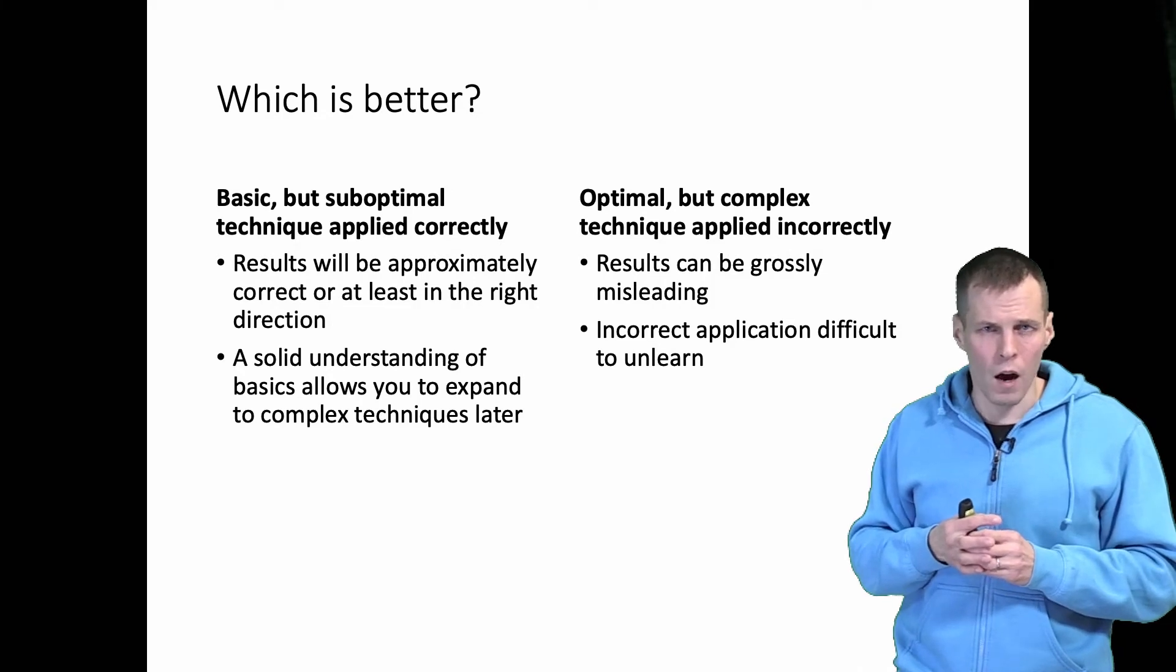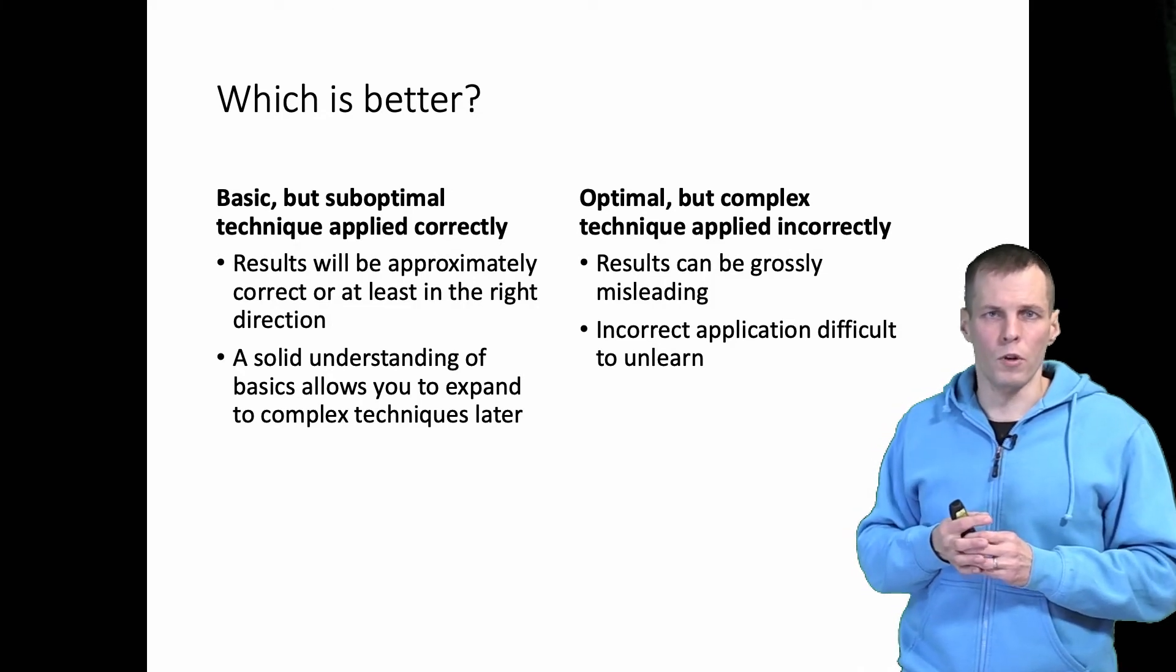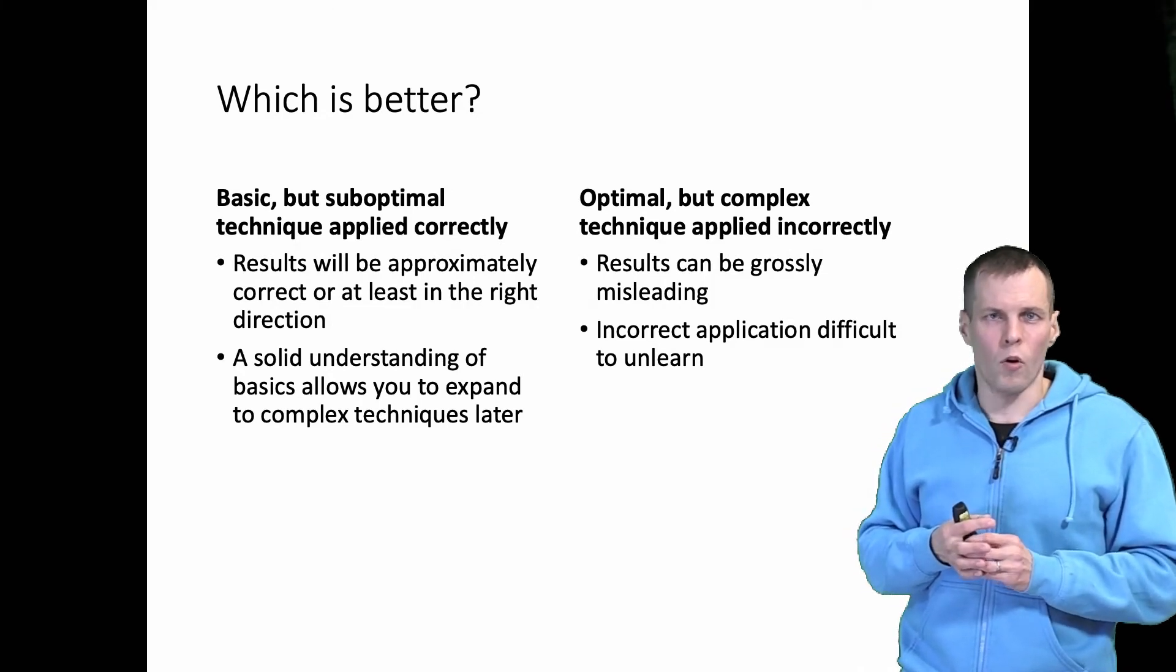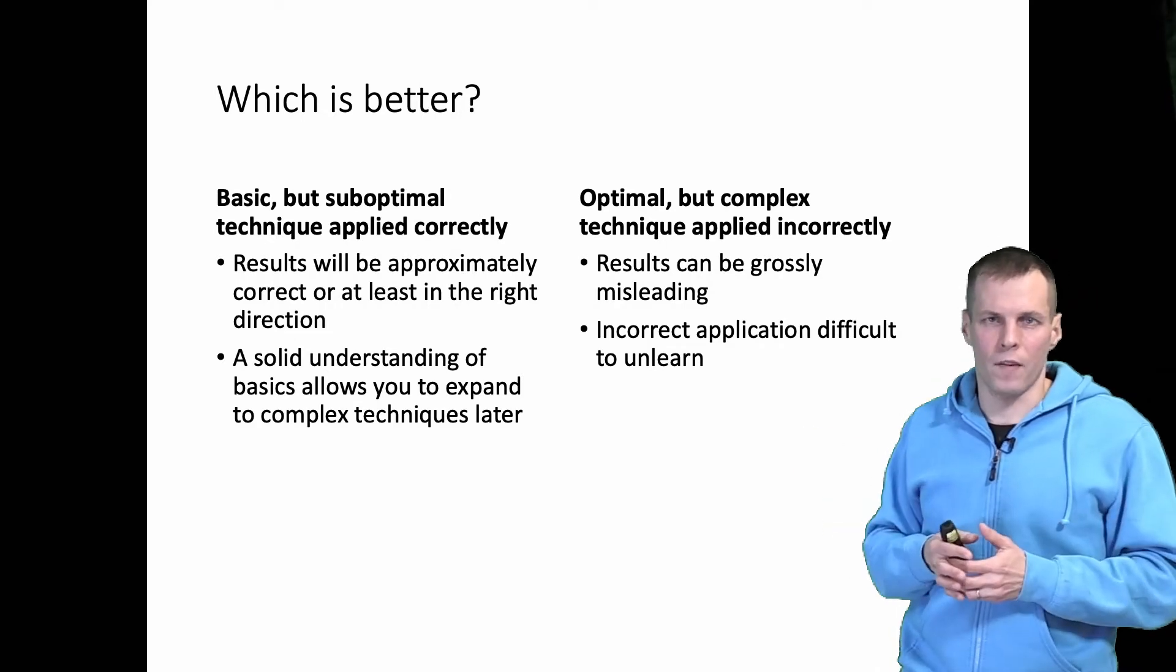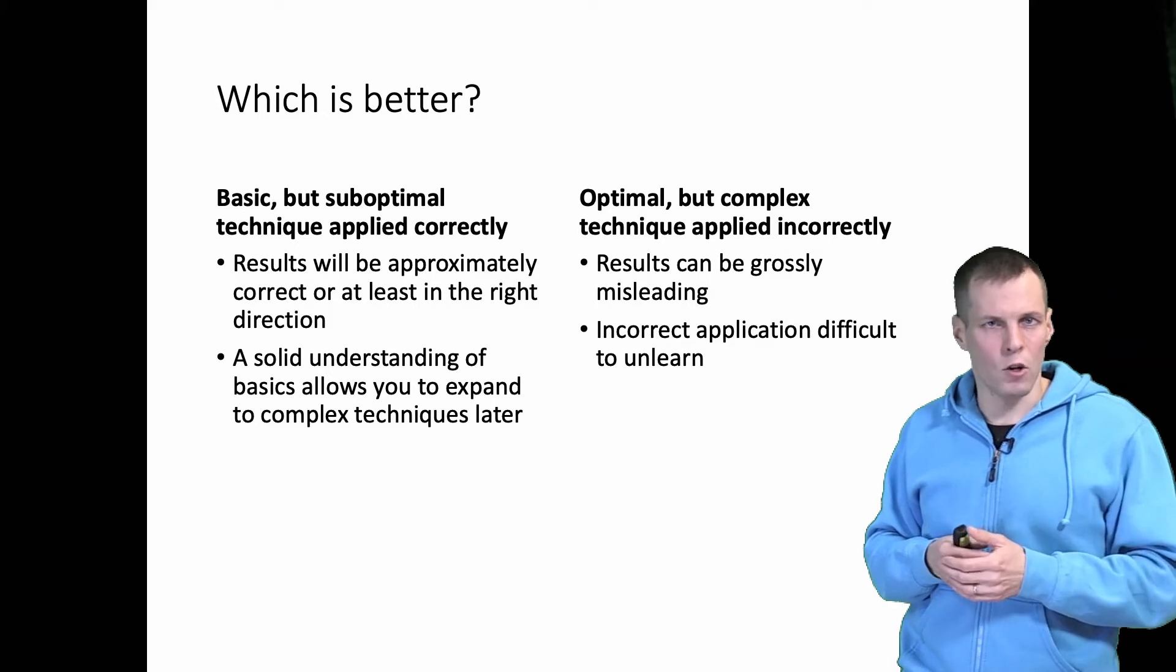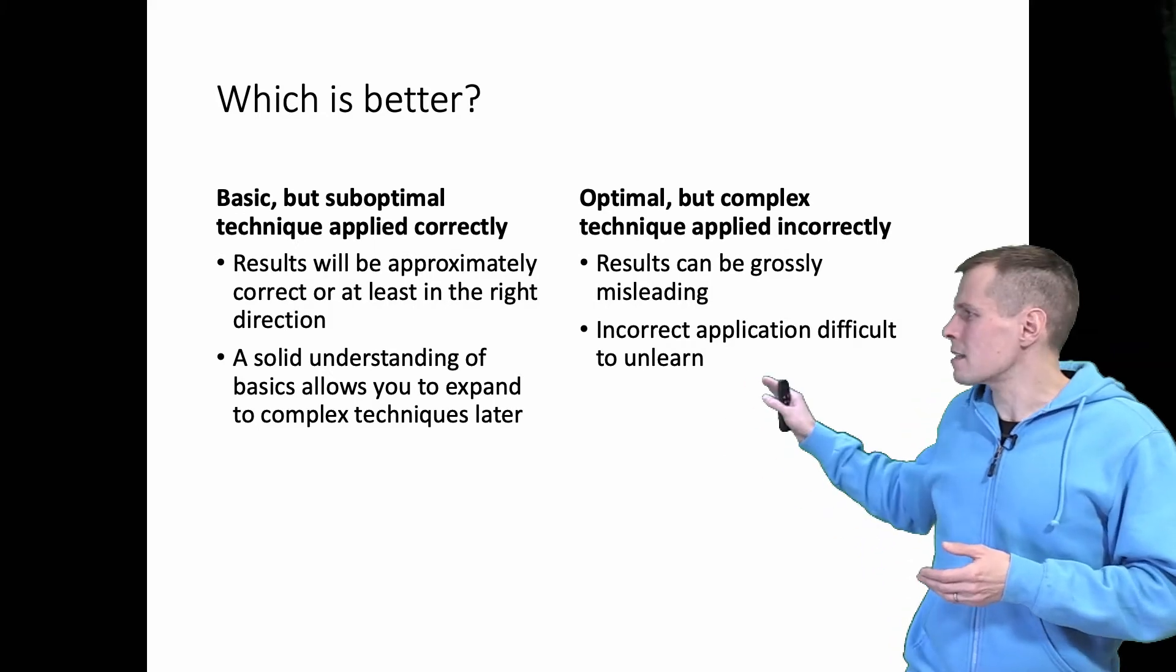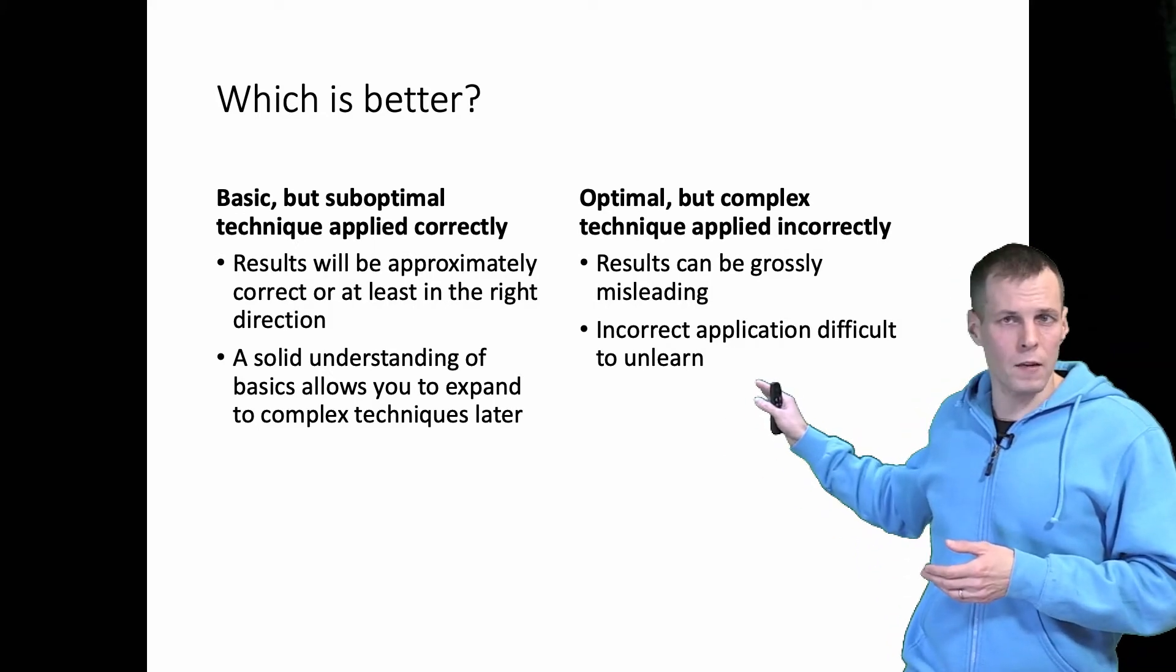R-square measures how good your model is or that chi-square can be fully ignored or that CFI greater than 0.9 is always good. These bad practices are difficult to unlearn. I've done lots of unlearning myself.